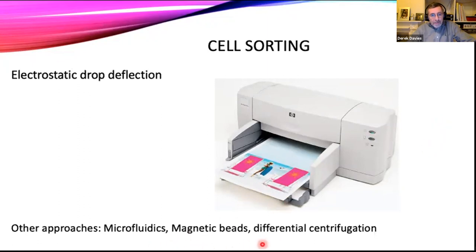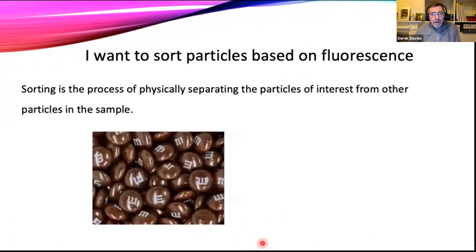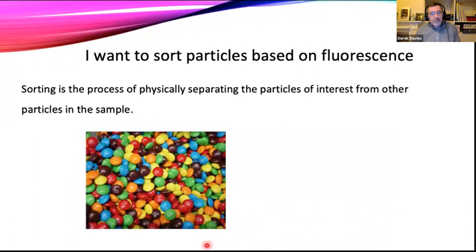The only problems you get with an inkjet printer is if you run out of ink or if you get a blocked nozzle, which are very similar problems that we get in flow cell sorters as well, which work on very much the same principle. You're probably also aware that there are other ways of sorting cells, particularly magnetic beads — the MACS beads or the Dynabead beads — which use a magnetically labelled antibody and a magnet. We're not doing that; we're using drop deflection.